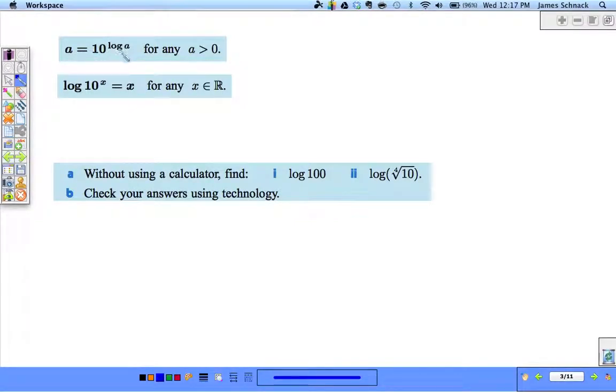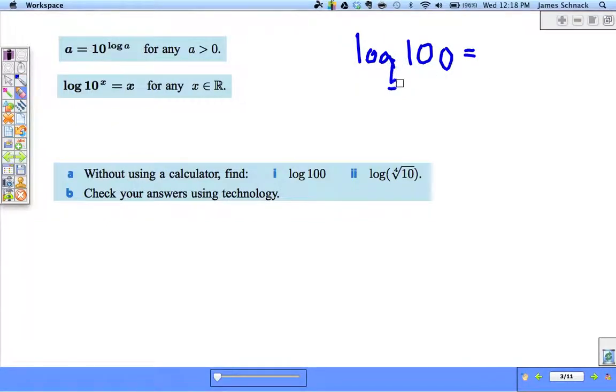If we have 10 to log base 10 of, say, 100, if we don't write a subscript down here, if we don't write a base, we're assuming that it's base 10. So this is equal to 2 because 10 squared is 100. So 10 to the log of a is just a, the log base 10 and the power of 10 cancel each other out. And then log base 10 of 10 to the x, again, those cancel each other out. They undo each other, leaving us with just the x.